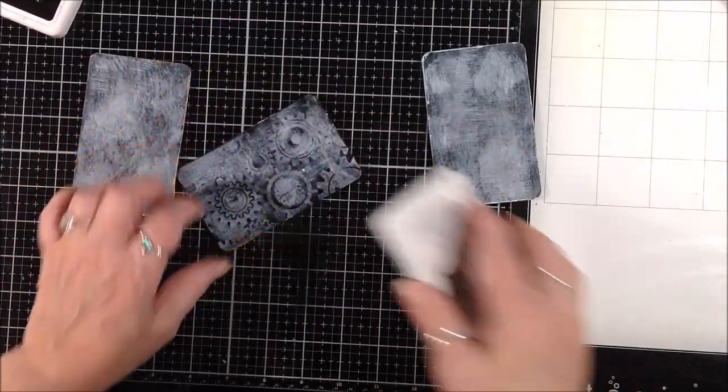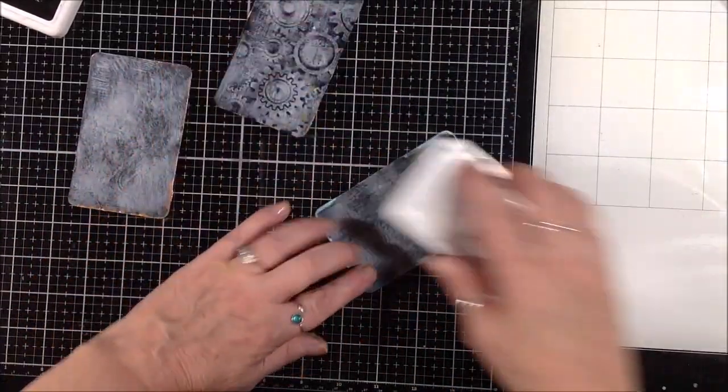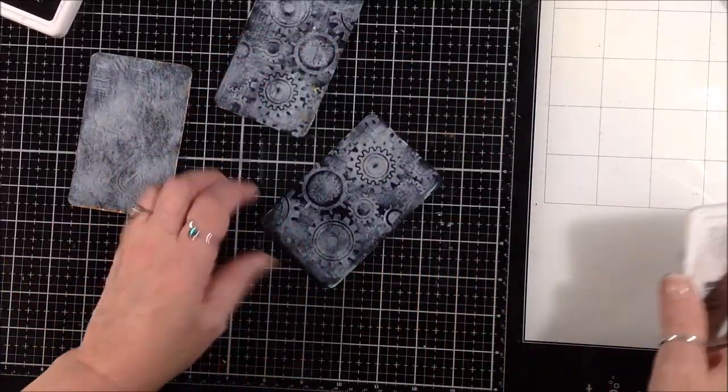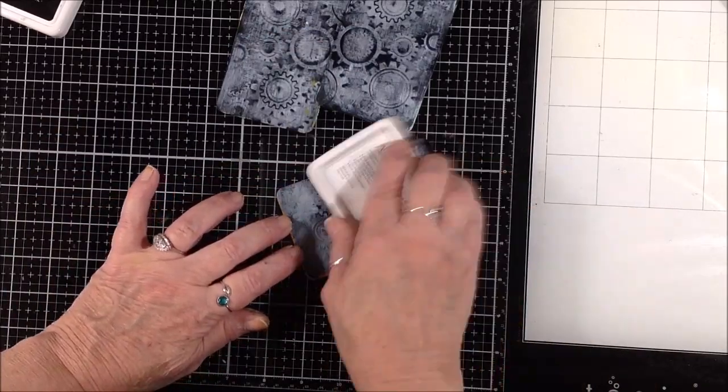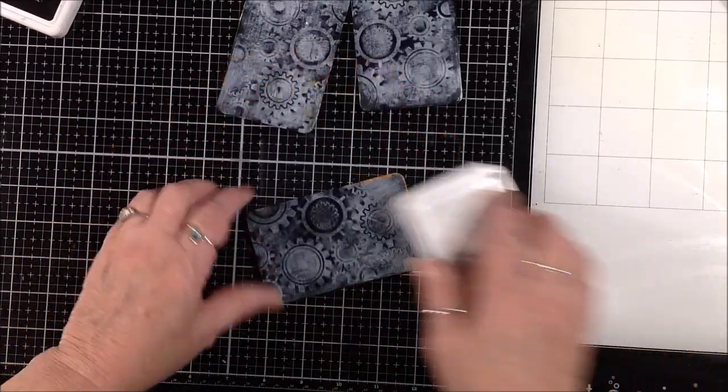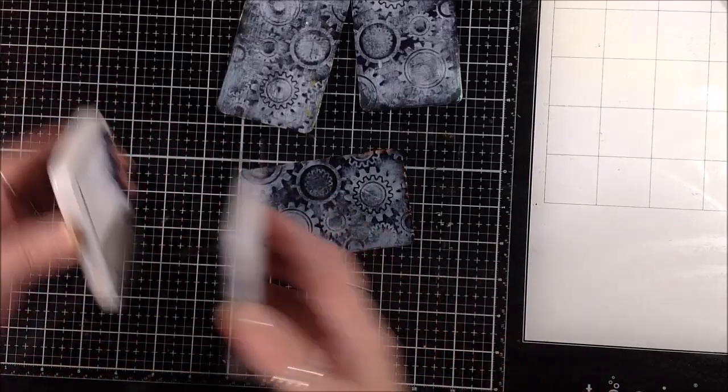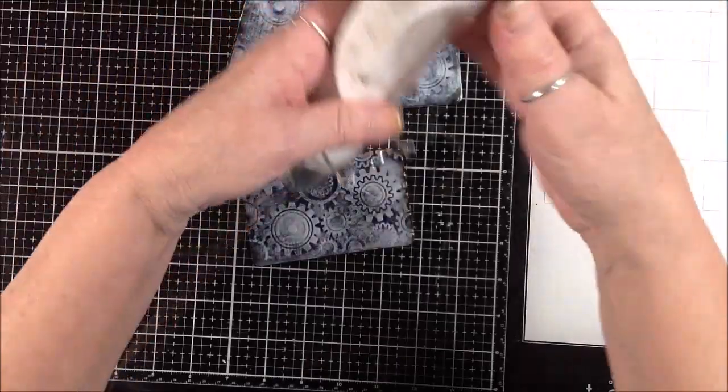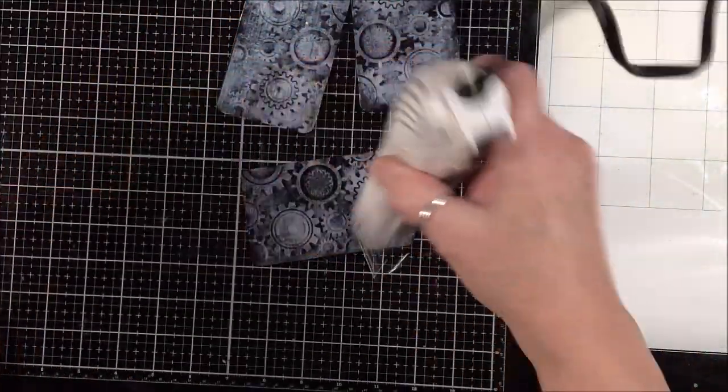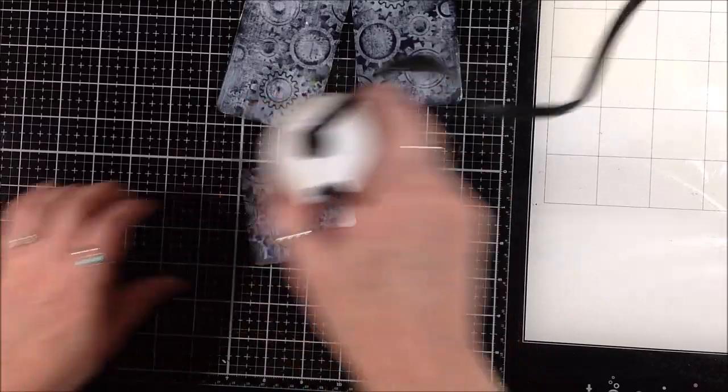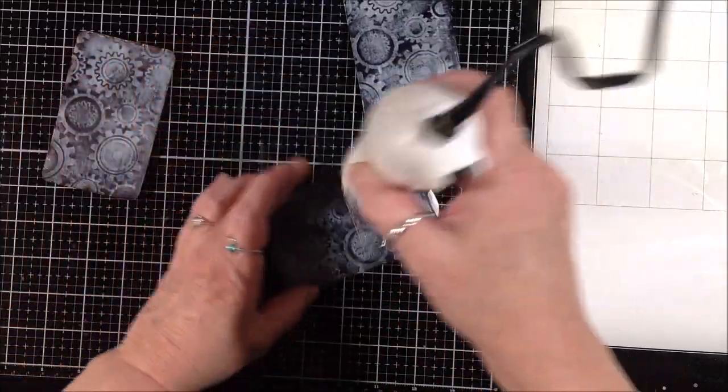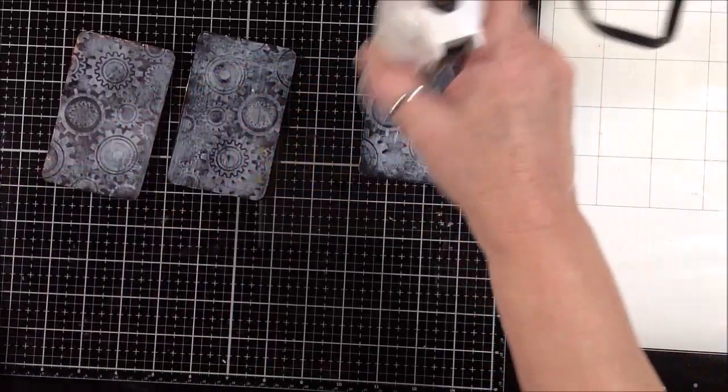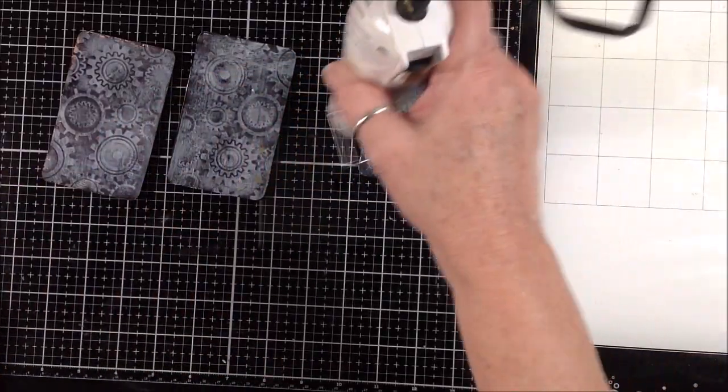I just flipped those over and took my jet black archival ink and just ran it across the backs of the cards just to bring that debossed image of the gears up to the top. And that's all I'm doing on the back. I like it, I'm just going to leave those alone. Actually, watching this back I realized I just lied to you, I didn't leave them alone.